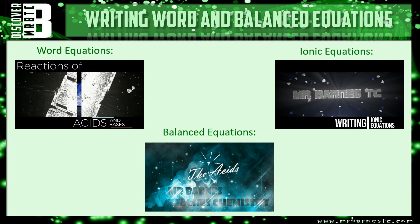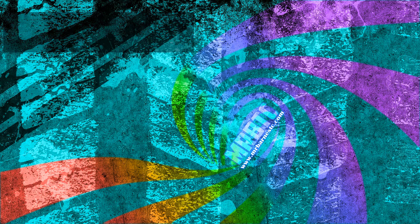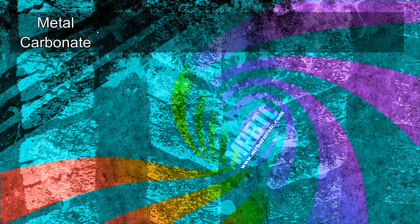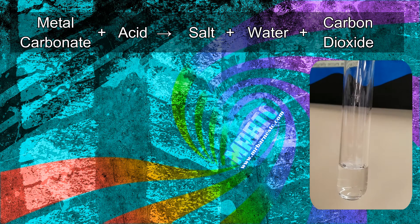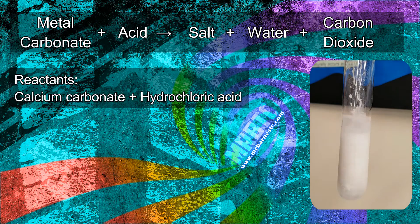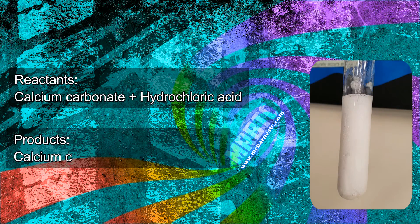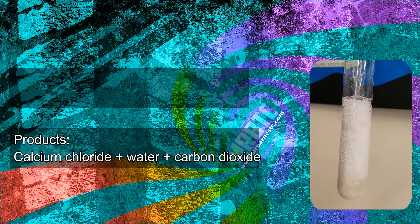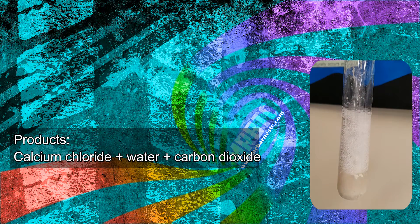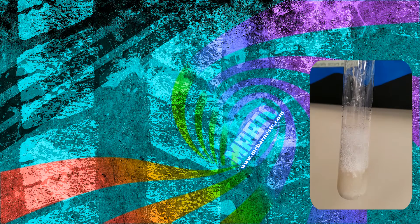The first thing you need to know is the general equation: metal carbonate plus acid forms a salt, water, and carbon dioxide. In this reaction you can see here, I'm reacting calcium carbonate and hydrochloric acid together, and the products formed are calcium chloride, water, and carbon dioxide. You can see the carbon dioxide being produced because of that bubbling and fizzing — that's your observation from the reaction.